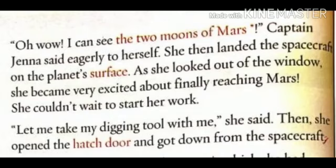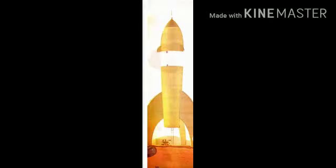Then she opened the hatch door and got down from the spacecraft. When she reached near Mars, she could see the two moons of Mars and was very happy. Captain Gina was very excited that she had finally landed on Mars and couldn't wait for her work to start. She took her digging tools and opened the hatch door — a special kind of door found in spacecraft to exit from it.